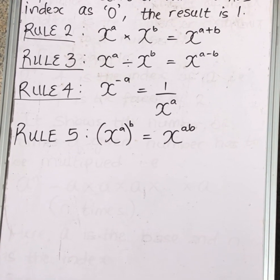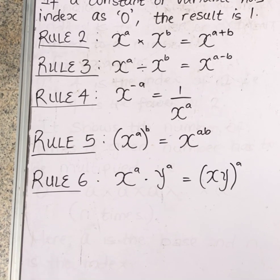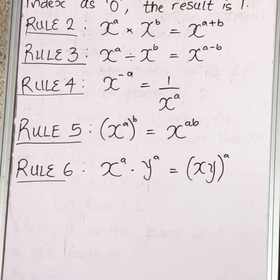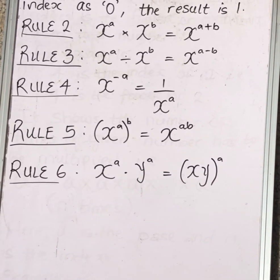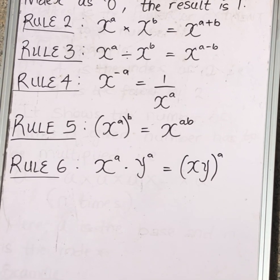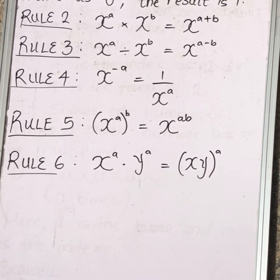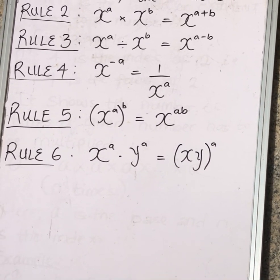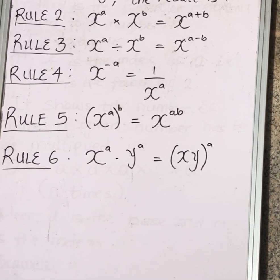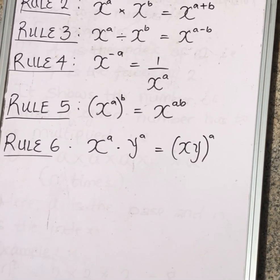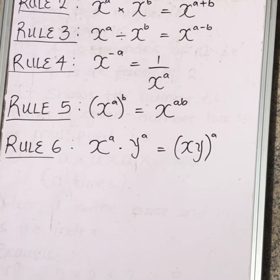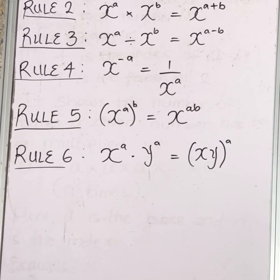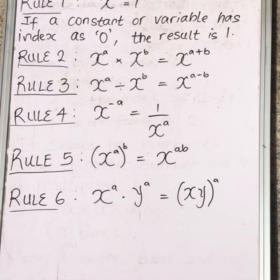Rule number six — note the difference between rule six and rule two. Rule two had same bases; rule six has two different bases. When you multiply two different bases having the same power, you bring the bases together and put just one power, because that power is common to both. X raised to power A times Y raised to power A gives you (X times Y) raised to the power A.